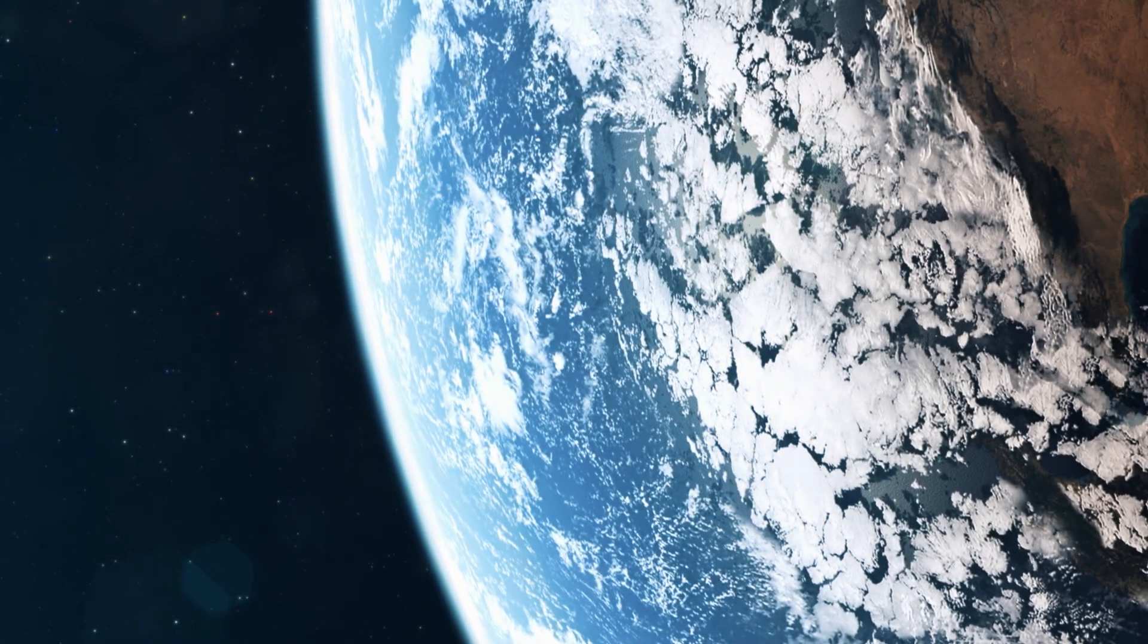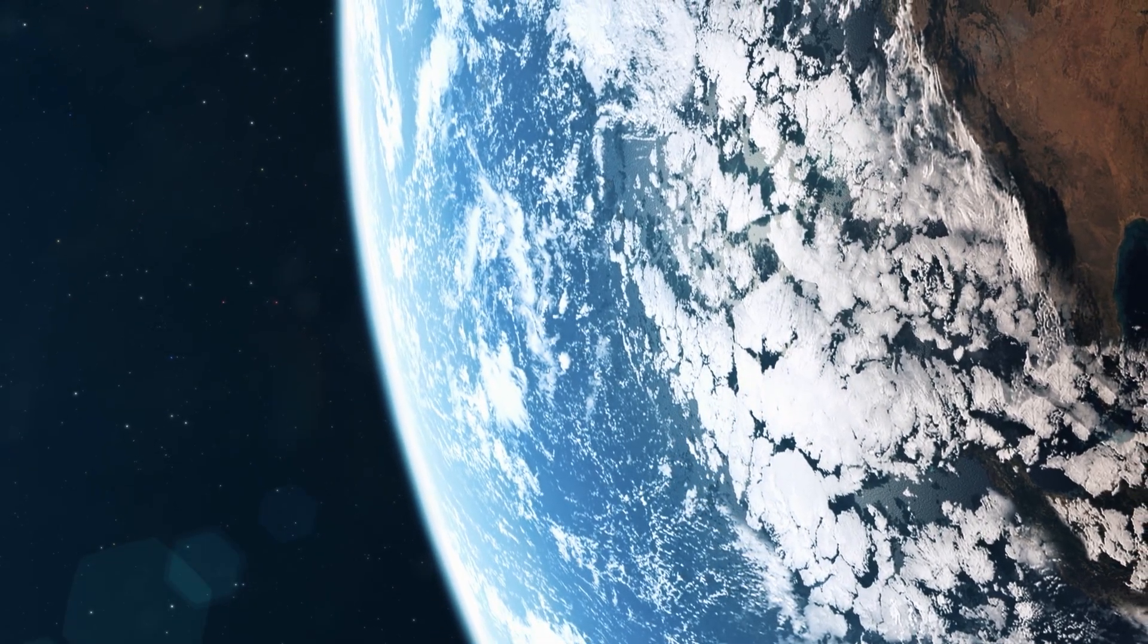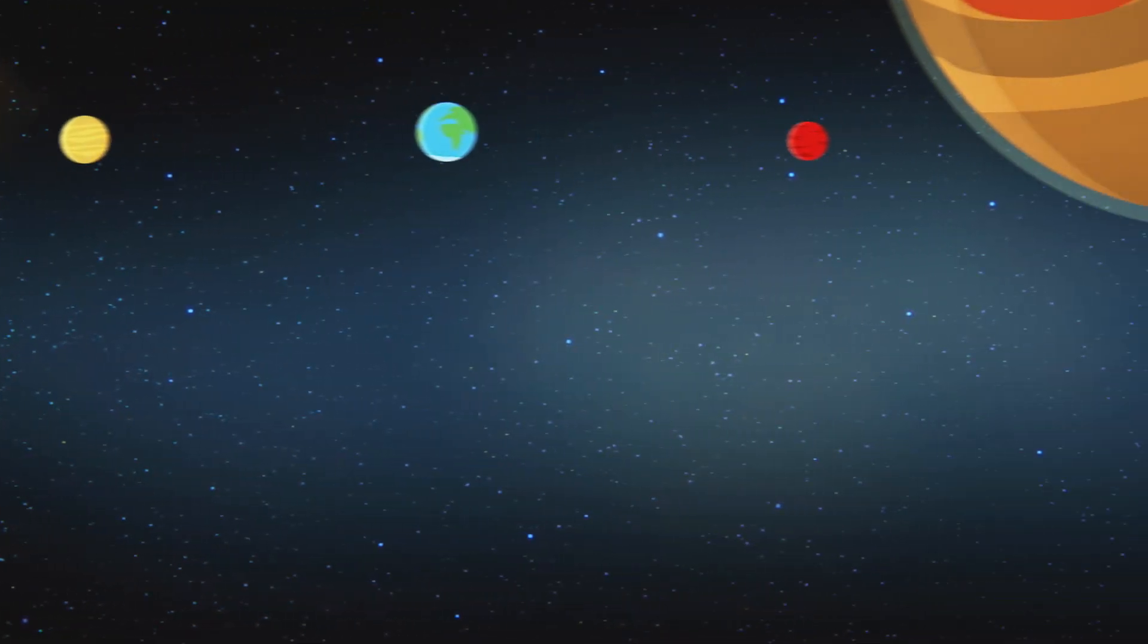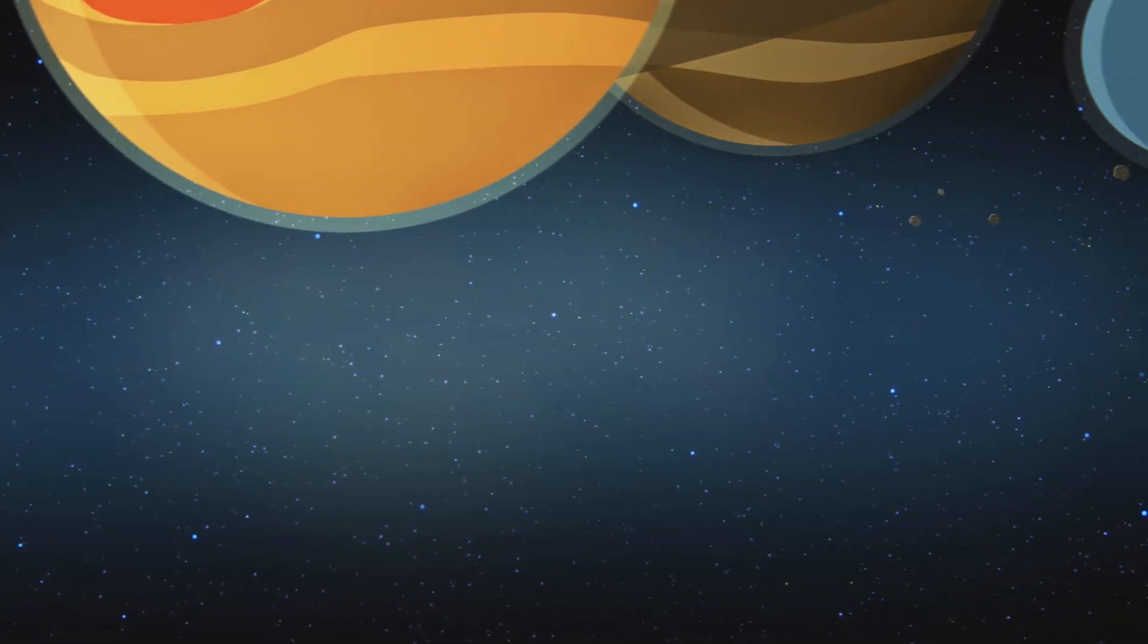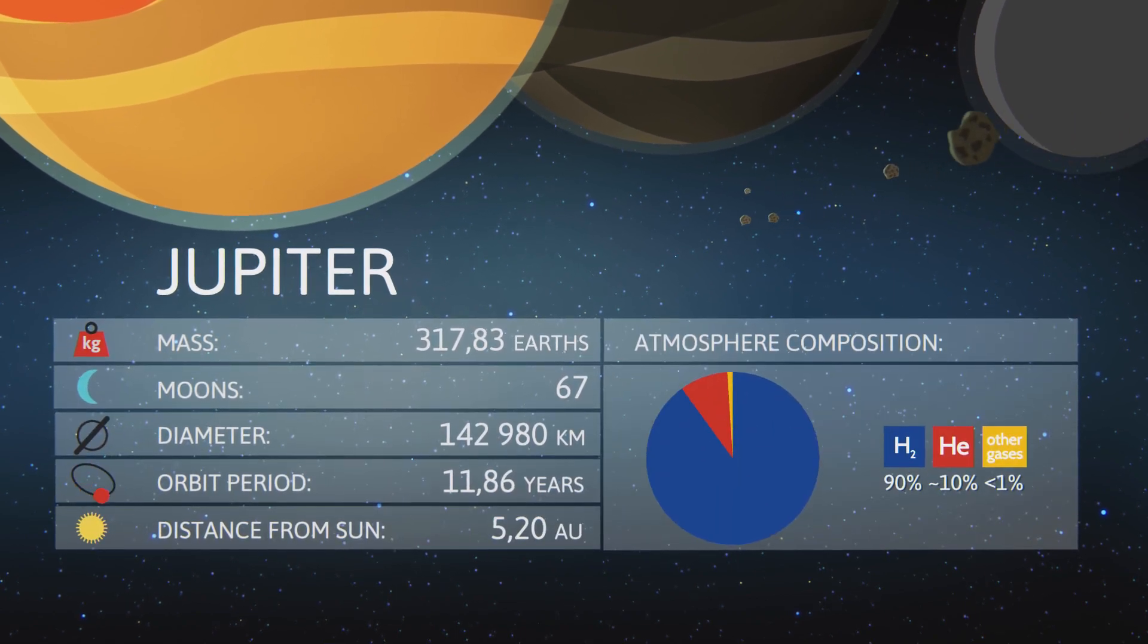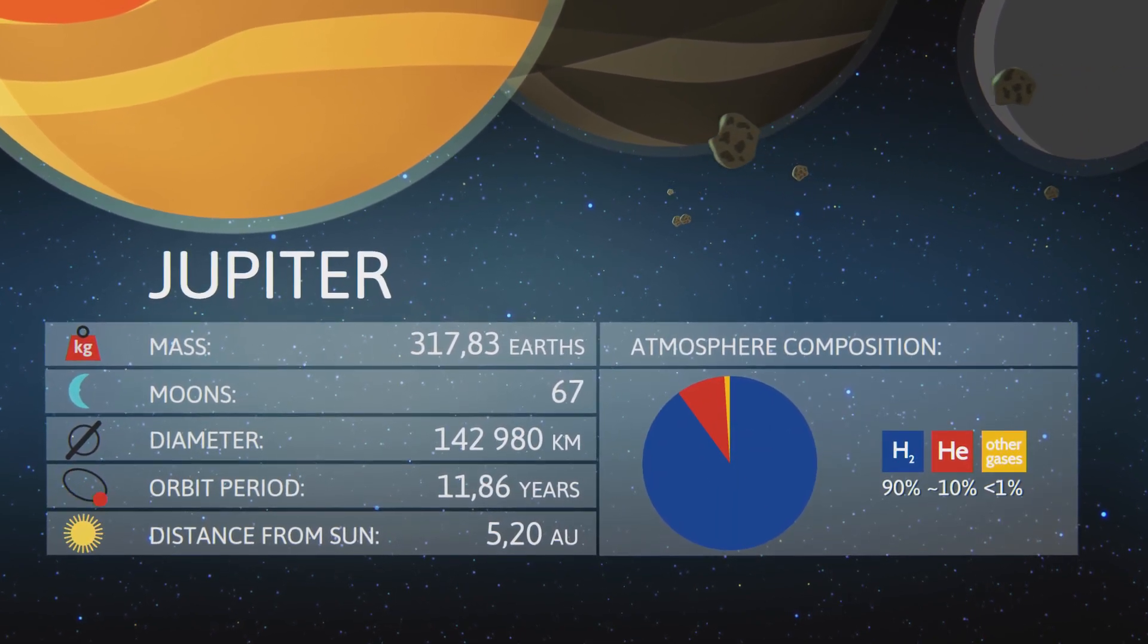Earth's position in the Goldilocks zone is not the only reason that life was able to flourish on the planet. The fact that we have these gas giants such as Jupiter that can pull in comets and asteroids with their large gravitational force gave Earth a fighting chance to allow life to develop.